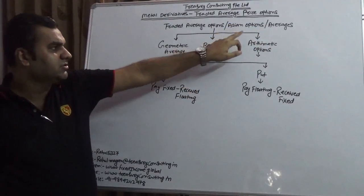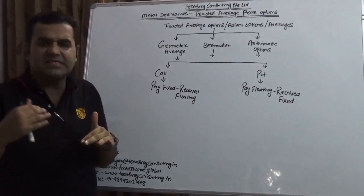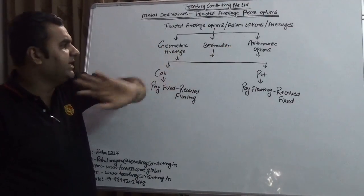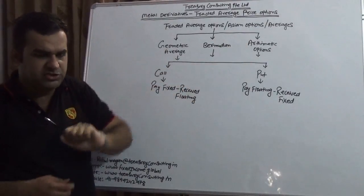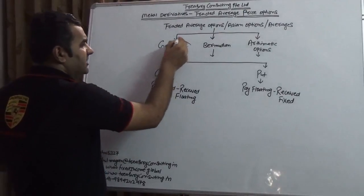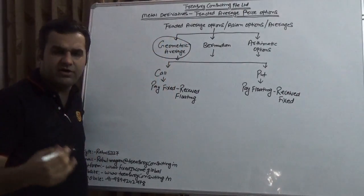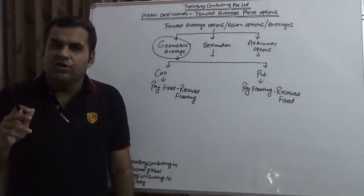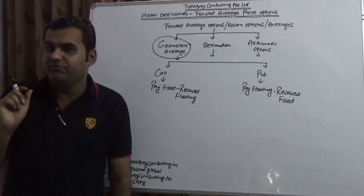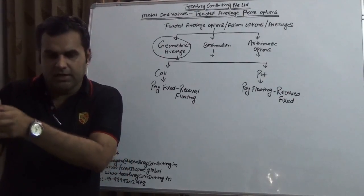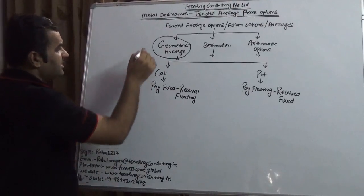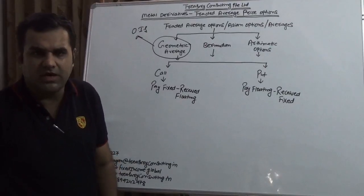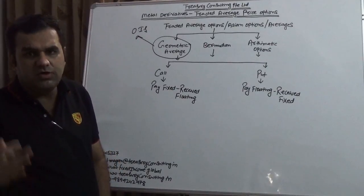If you look at this chart which I made, TAPO traded average option is also known as Asian option, sometimes known as path dependent options, and sometimes known as averages. The averages are basically of three types: number one is geometric average, number two is arithmetic average. When it comes to geometric average, if you are a regular subscriber of our videos, you would know that this geometric word would have come from already existing standards like OIS—overnight index swaps.